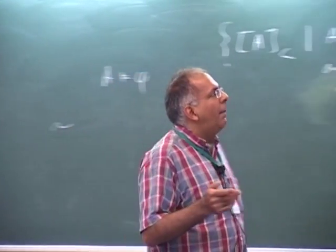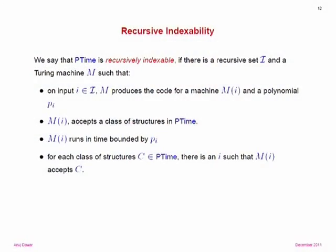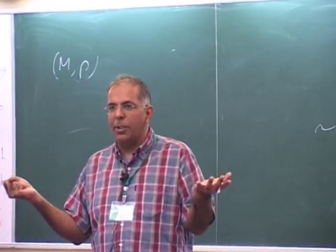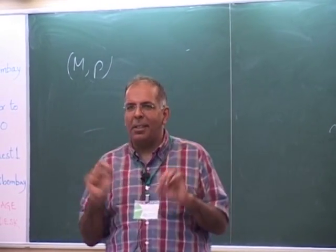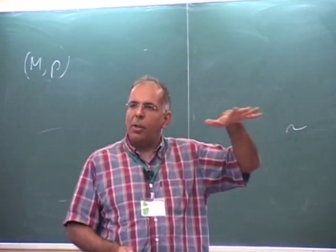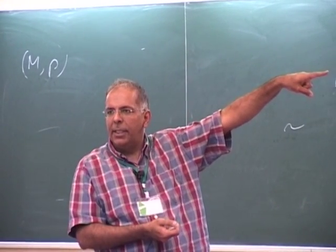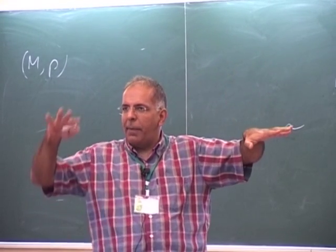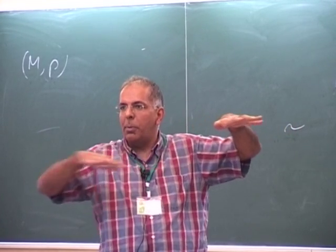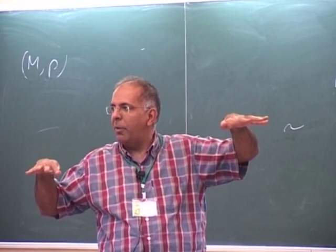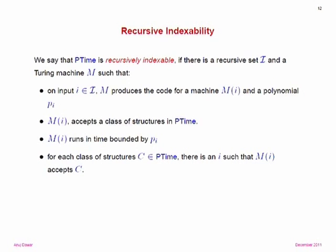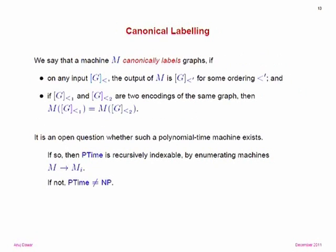Sometimes people say: if there's no logic for P, then P is different from NP simply because there is a logic for NP. But there is a slight subtlety: it's conceivable that there is a logic for NP and P equals NP, but there's no computable translation from NP machines to polynomial time ones. However, this possibility is easy to rule out.